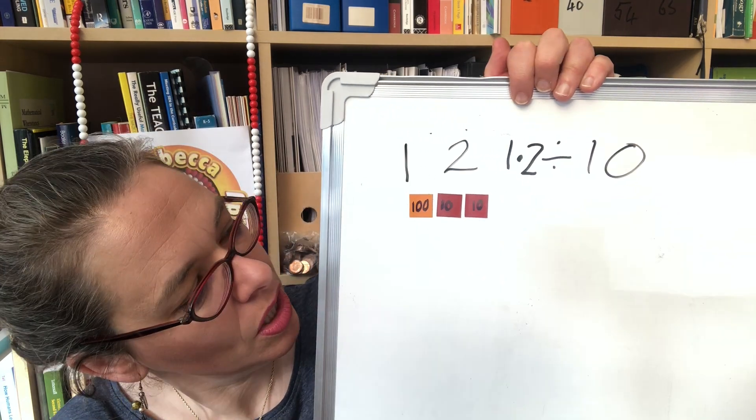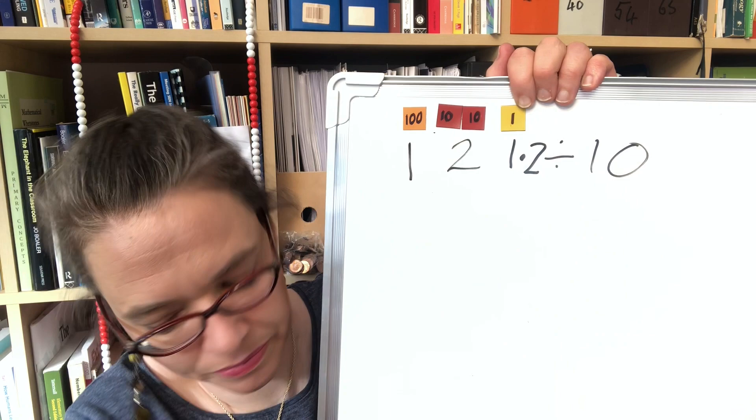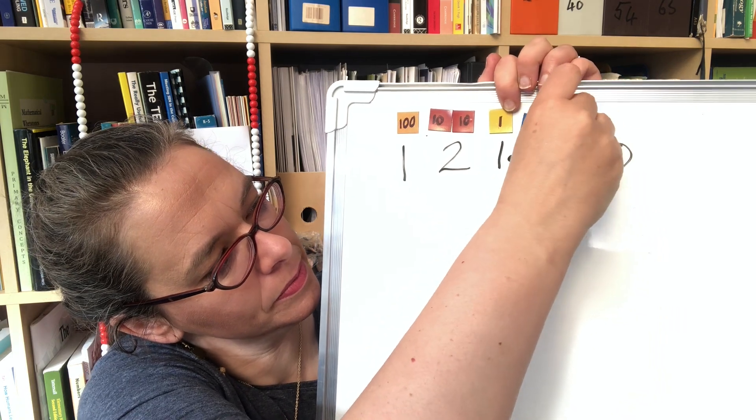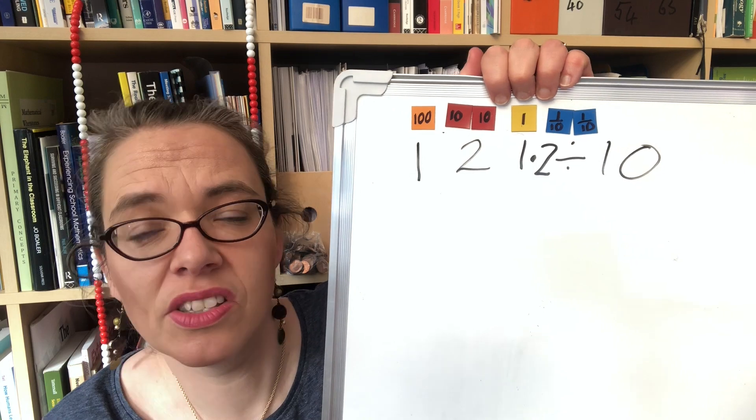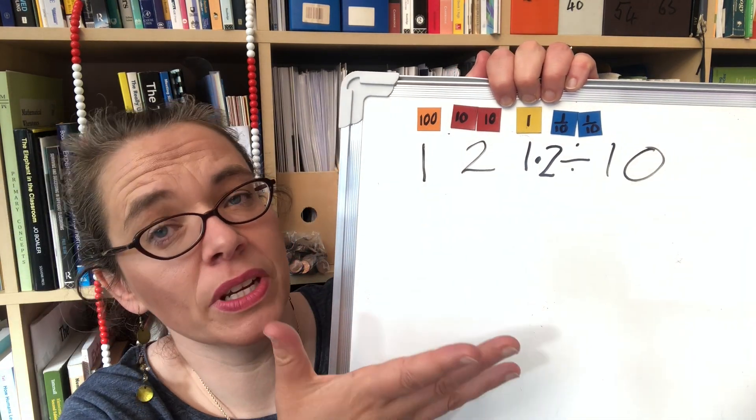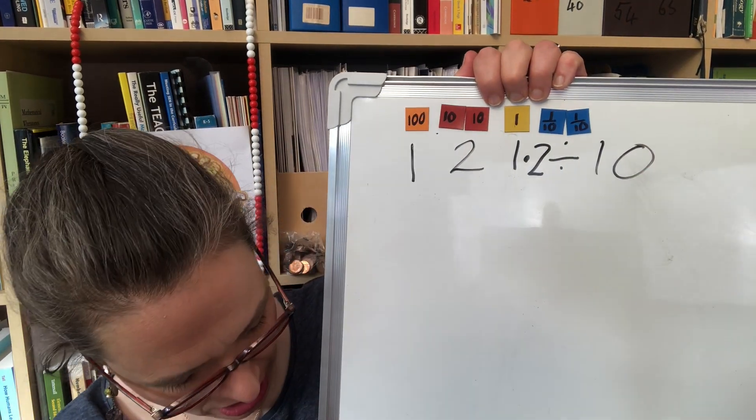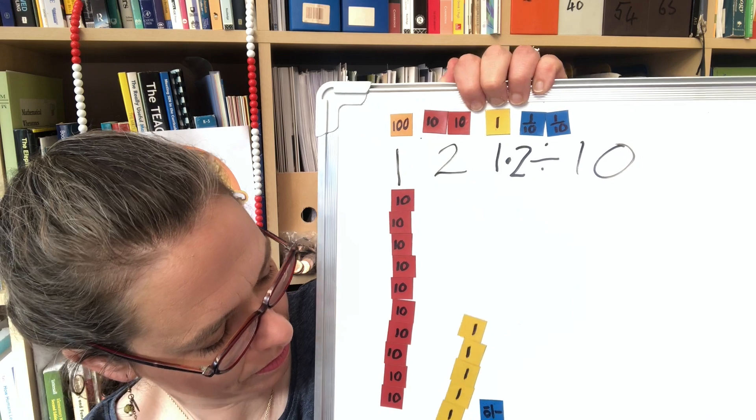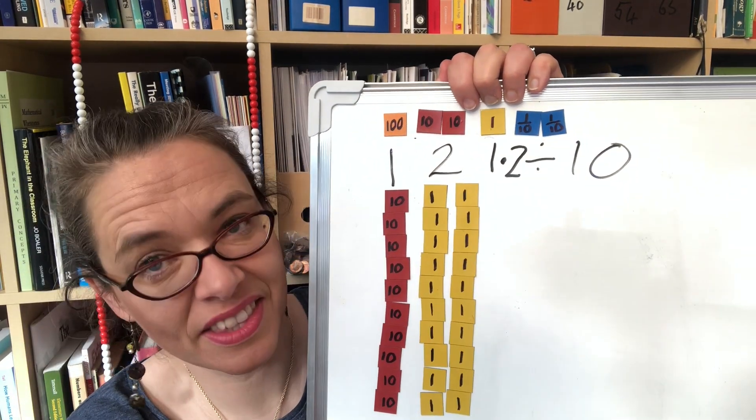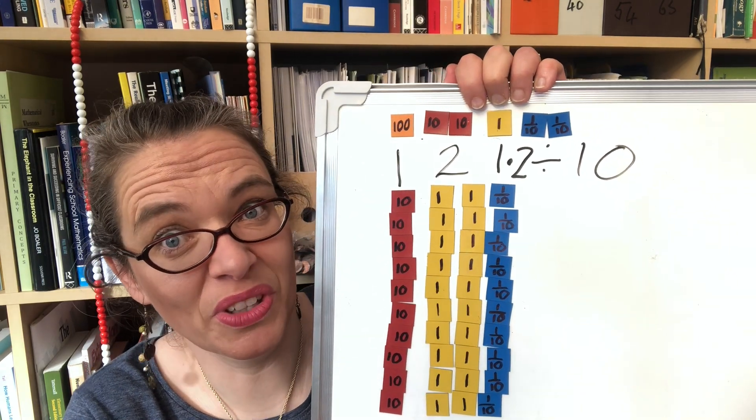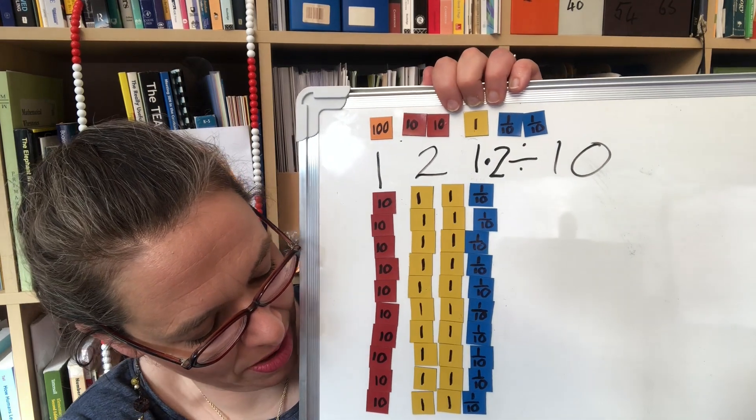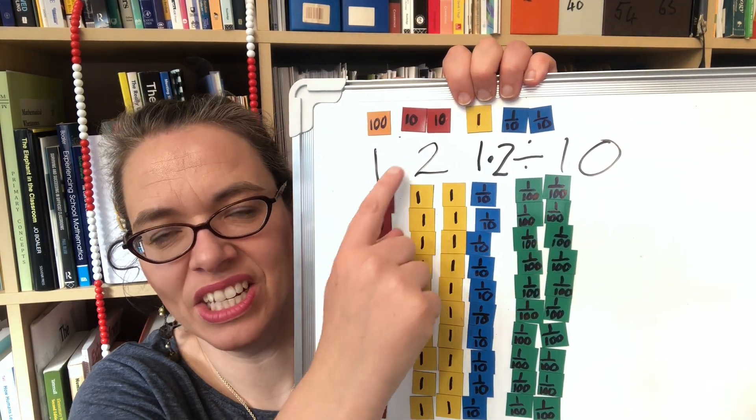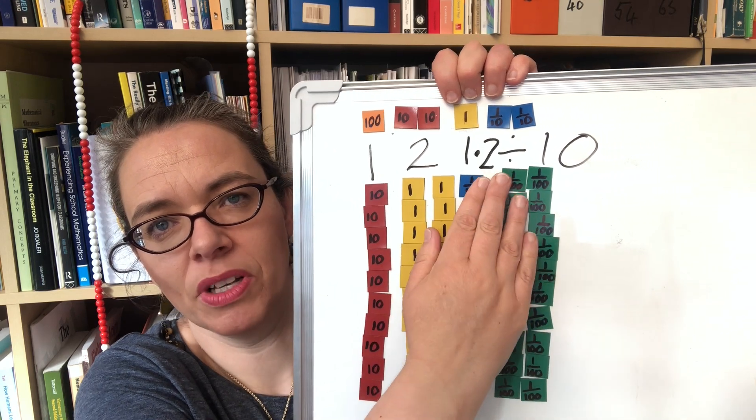So really we need to use the sharing fairly model of division to get to grips with the structure of what's going on. The way we do that is to build our number and to look at it and to say well to share each place value counter fairly between 10 people I'm going to need to exchange it. So the hundred is going to become tens, the two tens well each of those will need to become ones, the one needs to become tenths and the two tenths well they each need to become one hundredths.